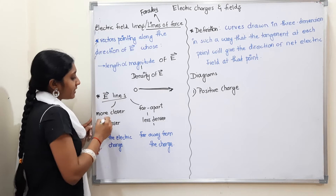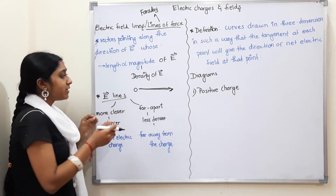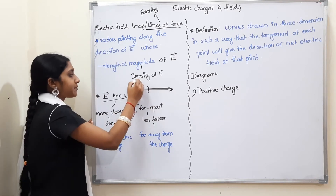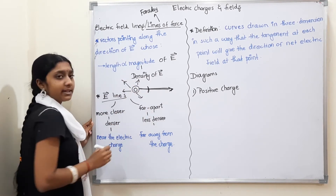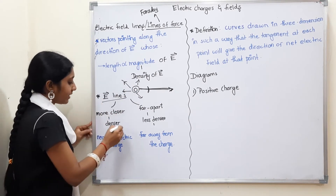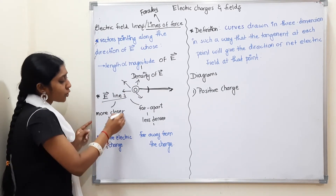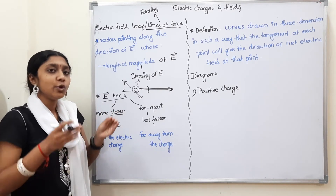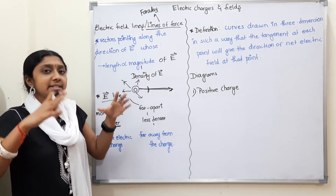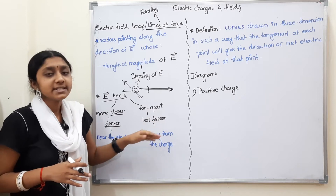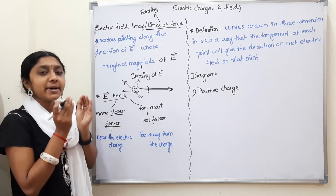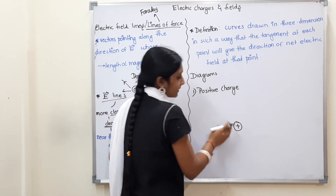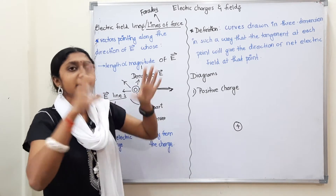Now, Electric Field Lines behave in two ways depending on region. Near a charge, the field lines are dense and close together. As you move farther from the charge, the field lines are far apart and less dense. For a positive charge, the electric field lines point radially outward from the charge.